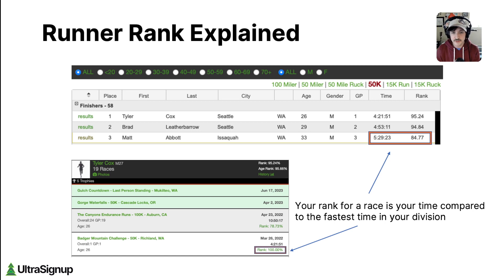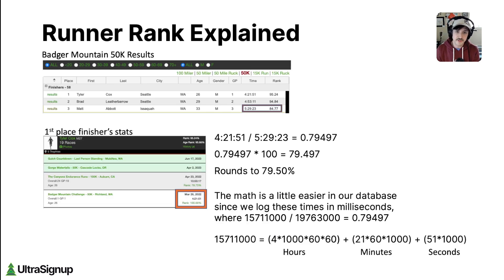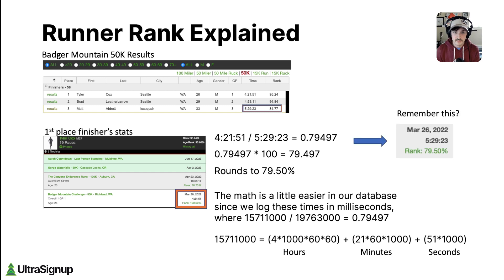If we click into Tyler Cox's results, you'll see that for Badger Mountain Challenge, Tyler was given 100% because he was the first finisher in my division. And to get my 79.50%, you'd take Tyler's time — 421.51 — and divide it by my time — 529.23 — which yields 0.79497. Multiply that by 100, round it to two decimal places, and you get 79.5%. That's what we saw on the previous screen.